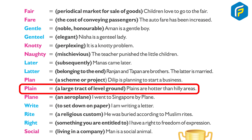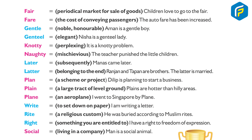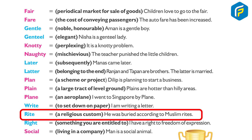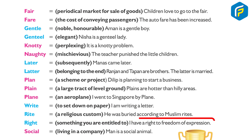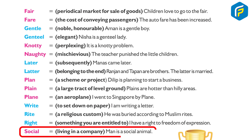Plan: a scheme or project — 'The team is planning to start a business.' Plain: a large tract of level ground — 'Plains are hotter than hilly areas.' Plane: an airplane — 'I went to Singapore by plane.' Write: to put down on paper — 'I am writing a letter.' Rite: a religious custom — 'He was buried according to Muslim rites.'